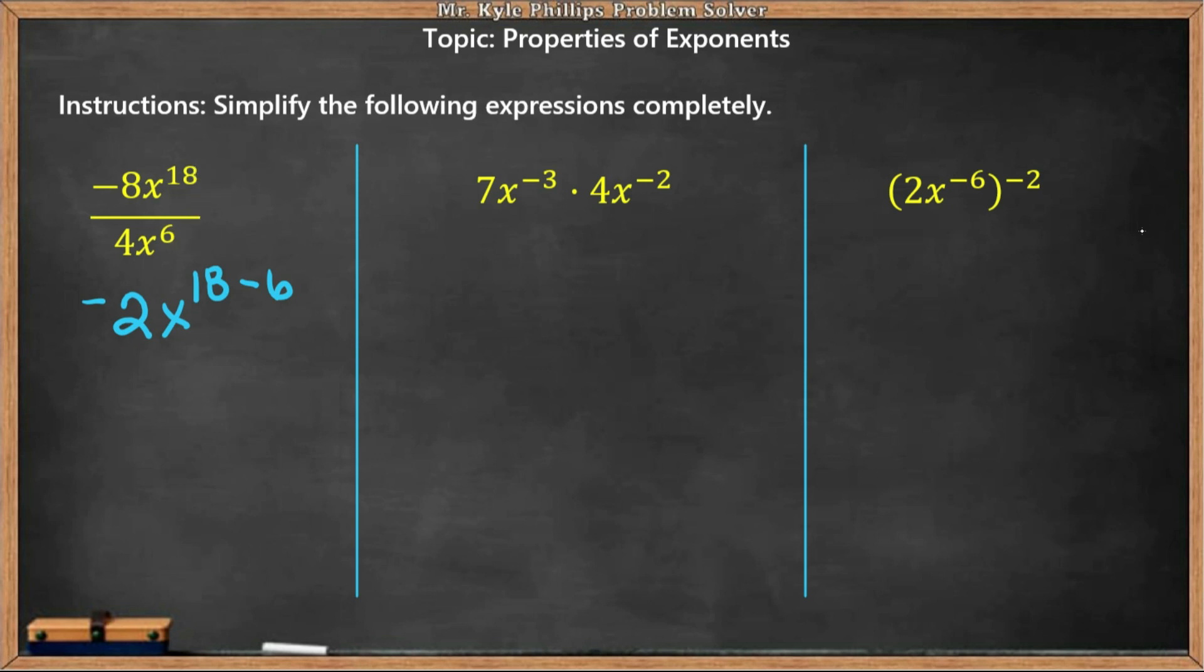So that would be x to the 18th minus 6. Remember, it's always the top value minus the bottom value. So we'll rewrite this to be -2x, and 18 minus 6 is going to give us 12.